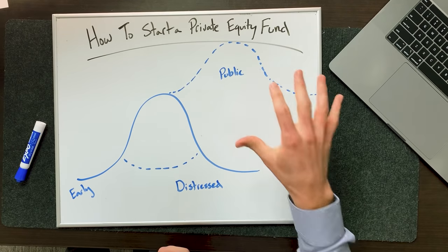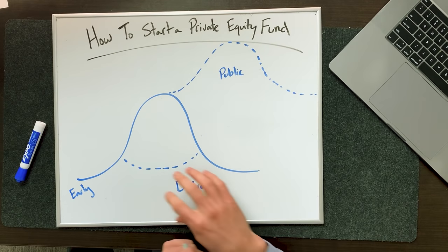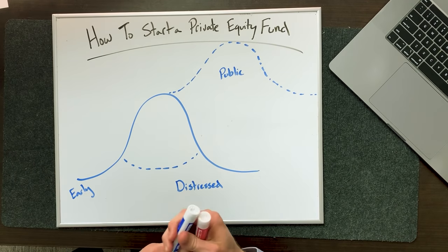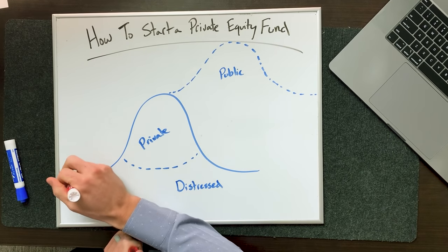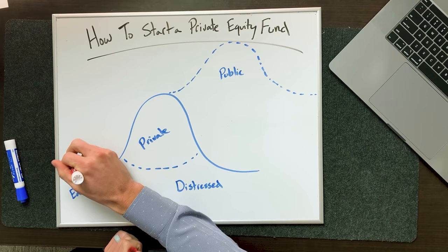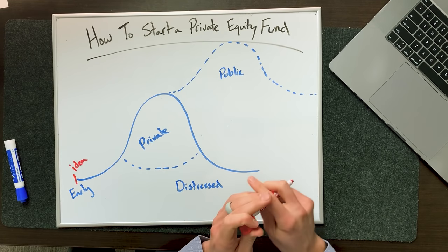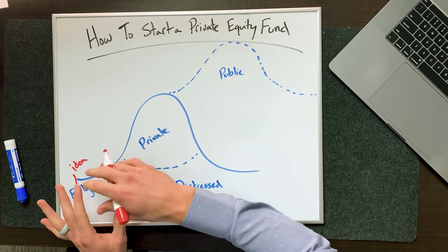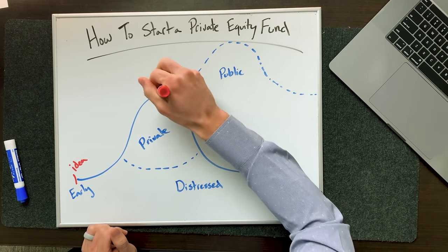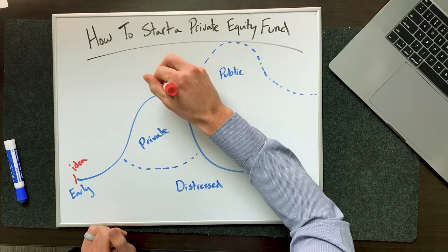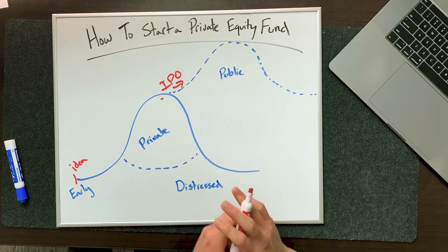So right here you have your public market, public growth cycle. This is your private growth cycle over here. On the left you have early stage companies — these are way early, idea stage to very early implementation. These companies hopefully do well, they come up, they mature, and then they may become distressed. If they're mature enough and do really well, sometimes they can go public — they can have an IPO event — and now they're in the public markets.